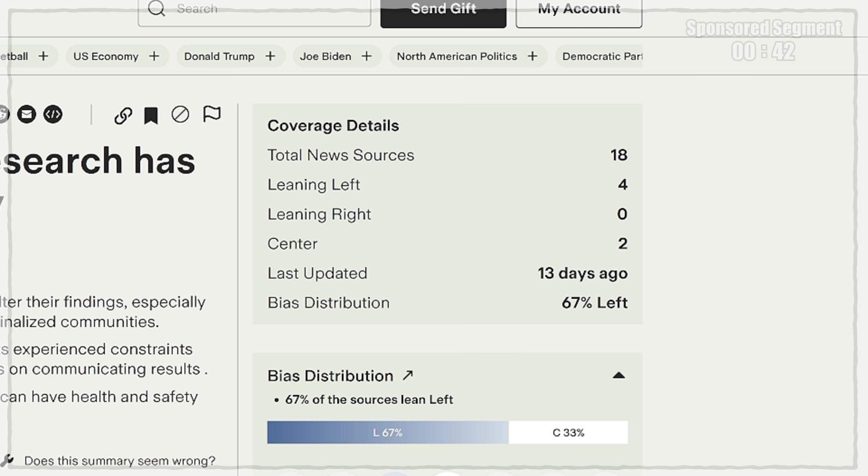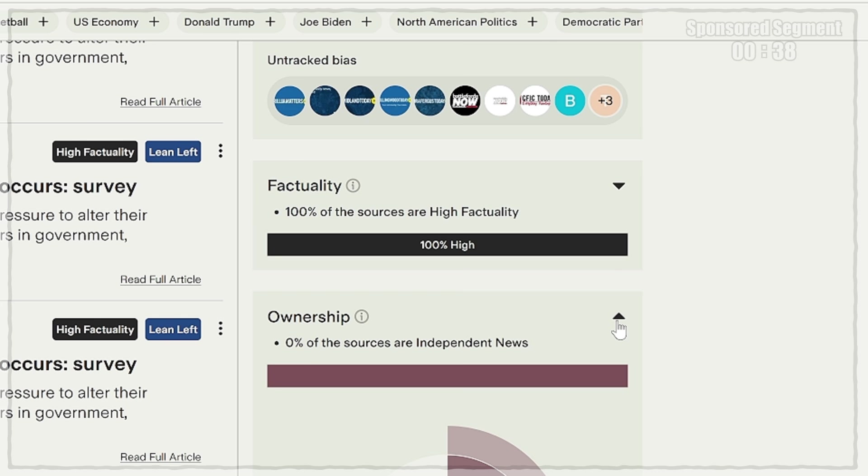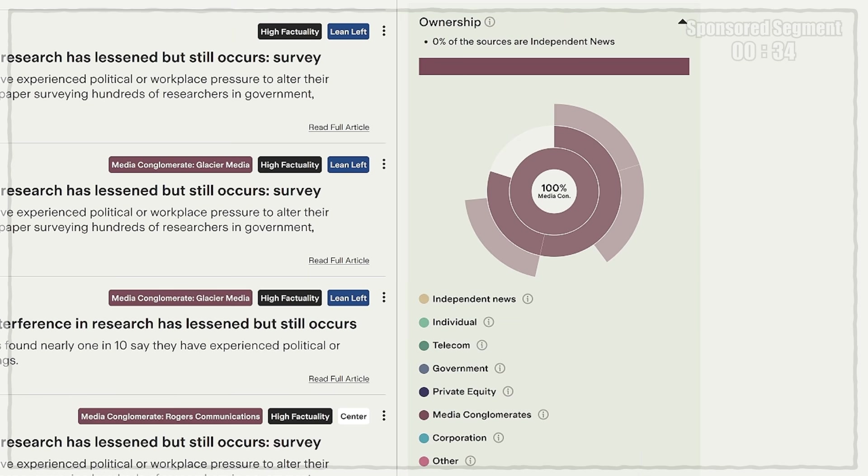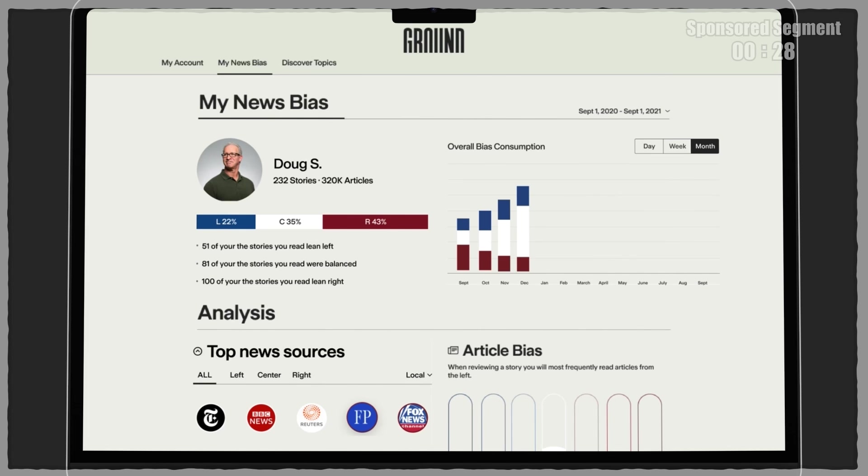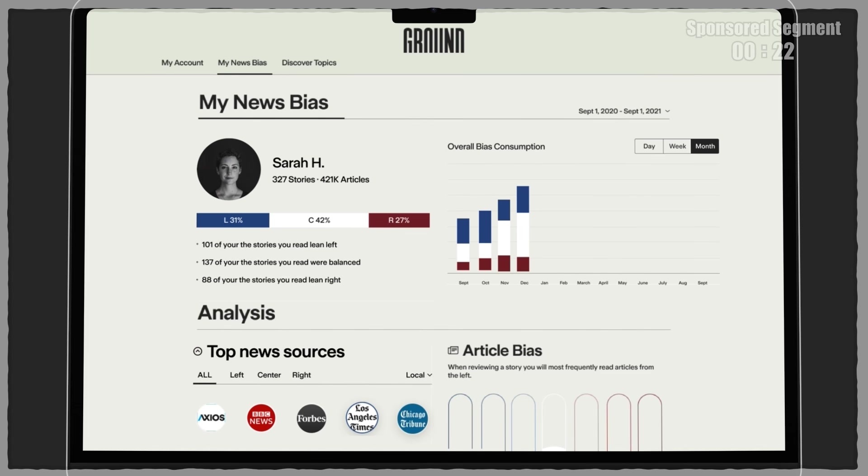But I like being able to see the sources on screen along with their lean. You can see the factuality ratings for each along with their ownership breakdown. In this case, 100% of the sources reporting on this story are owned by media conglomerates. My favorite part is a feature called My News Bias, which keeps track of your reading habits over time, so that you can see and change your own biases.